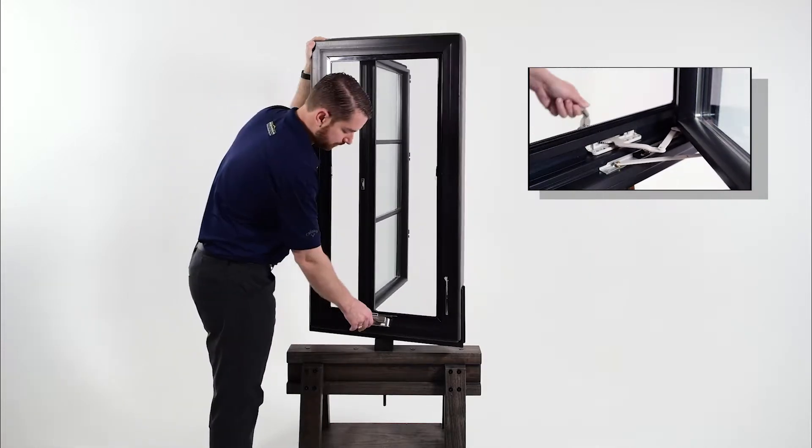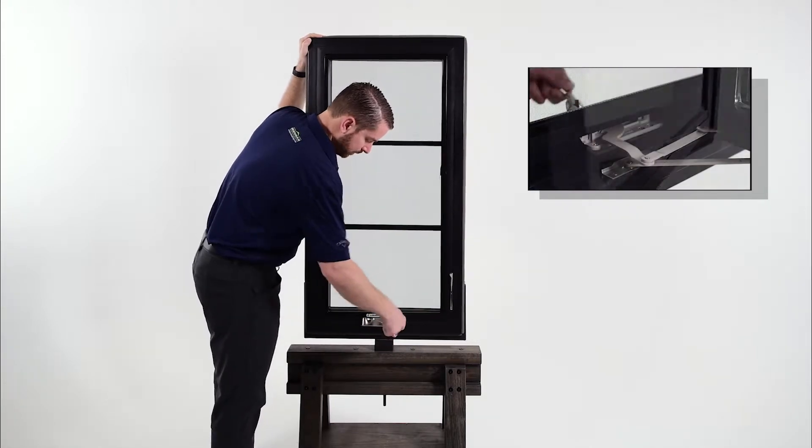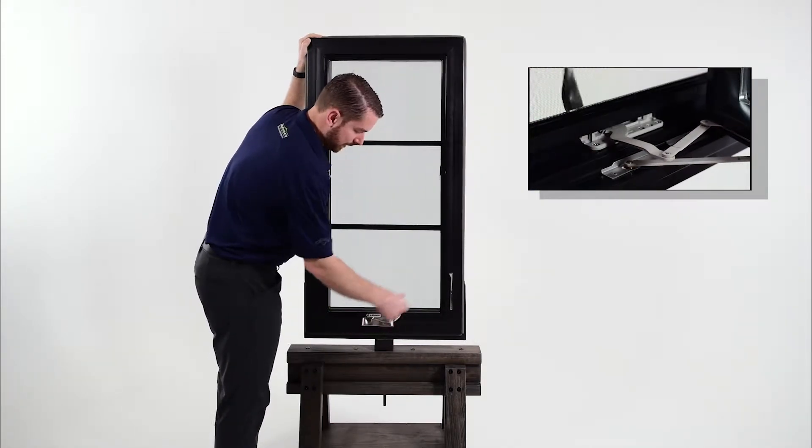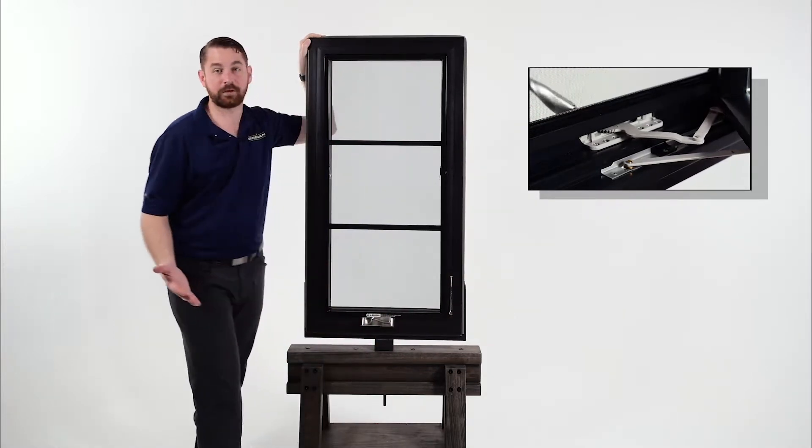So we'll go ahead and close it. Put the handle back in the nested position, lock the lever. Now the window is fully closed and locked.